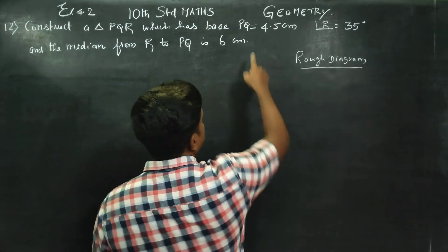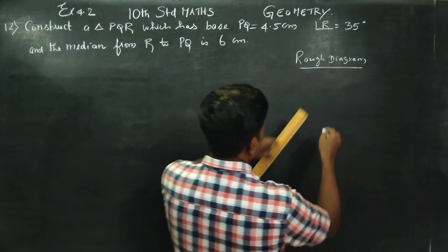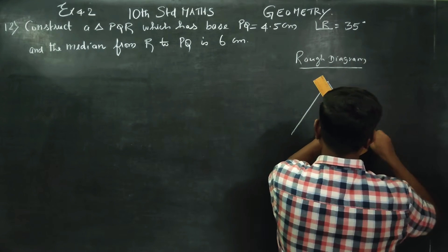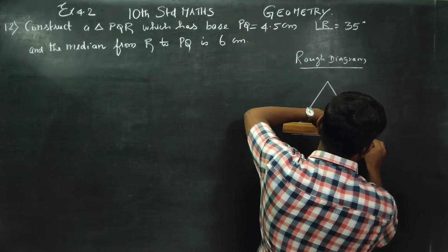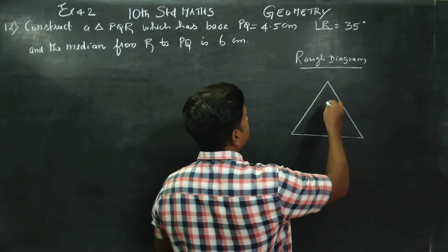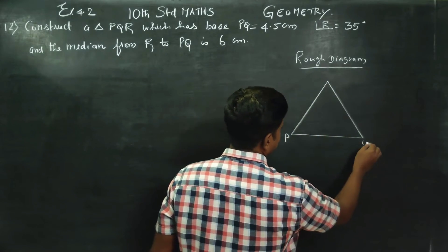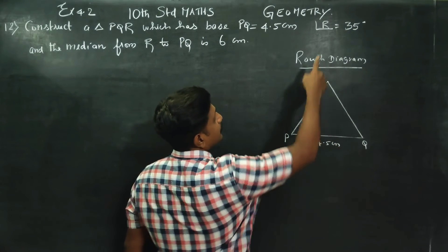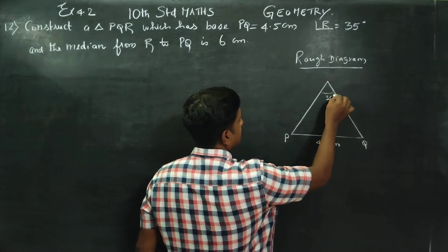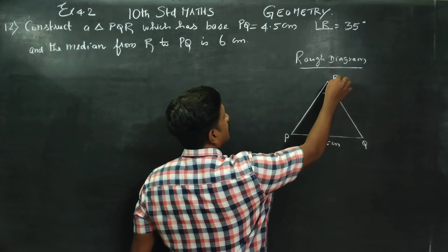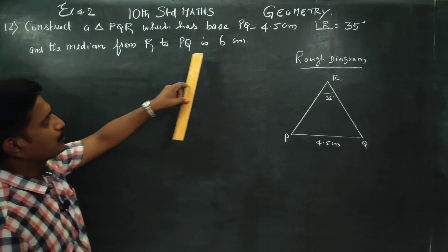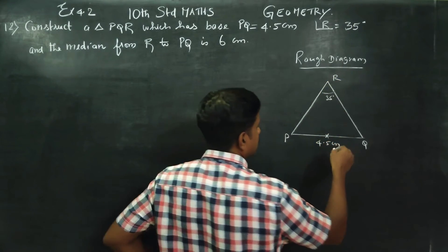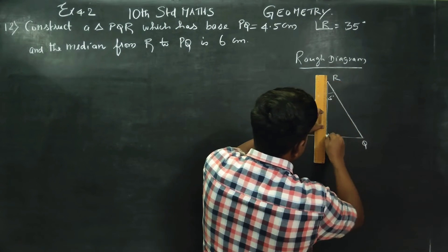PQ is the base. Draw a triangle with PQ as the base measuring 4.5 cm. The top angle is 35 degrees. The median from R to PQ is 6 cm. The median goes to the middle point of PQ, and the length is 6 cm.